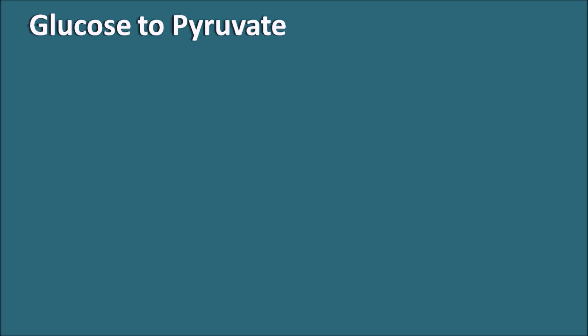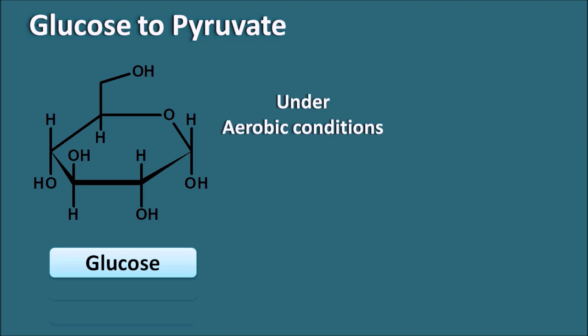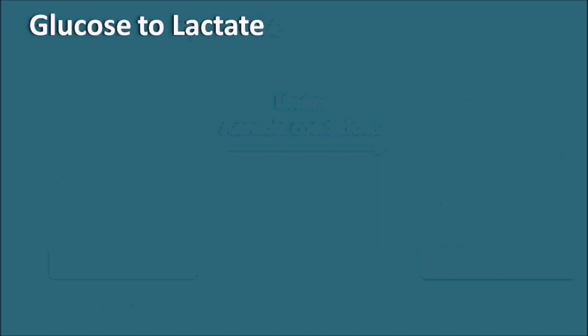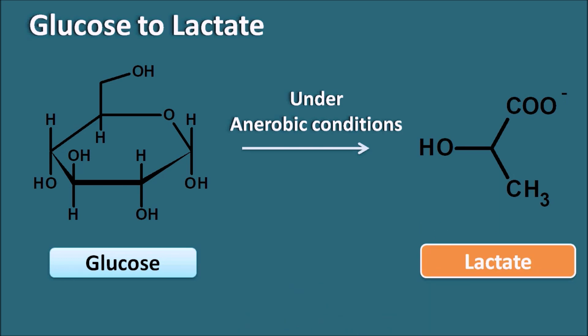Glucose is converted into pyruvate under aerobic conditions. Pyruvate is a C3 carbon molecule with a carboxylic acid at the first position and a ketone at the second position. Under anaerobic conditions, glucose is converted into lactate instead. Lactate is also a C3 molecule, but at the second position it has a hydroxyl group instead of a keto group — so lactate is simply the reduced form of pyruvate.